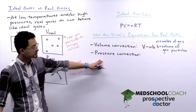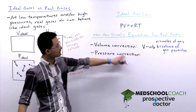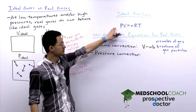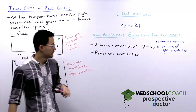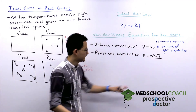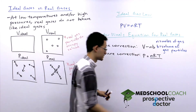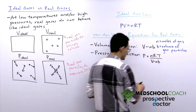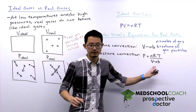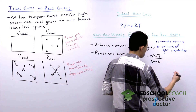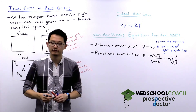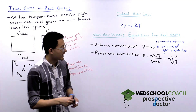Now let's make the correction for pressure. Rearranging the ideal gas law gives us pressure equal to nRT divided by volume. We can plug in the corrected volume, giving nRT divided by (V minus nb). However, since real gases have a lower pressure than ideal gases, we have to subtract a term from this expression. The term we subtract is a times (n over V) squared.